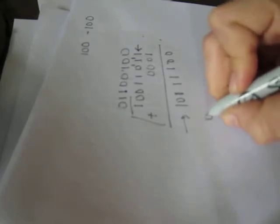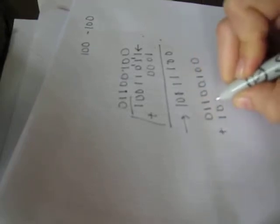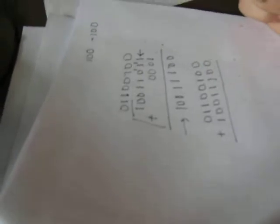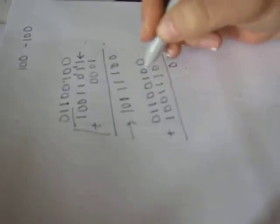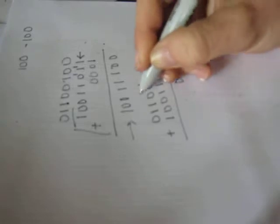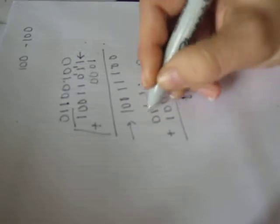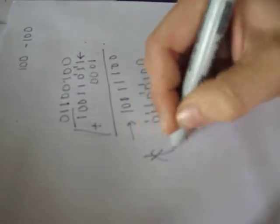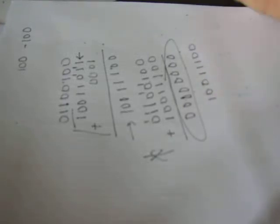So when we add a one, we get: one plus one, one plus one, one plus one, one, one, one — giving us 10011100. So now this is our two's complement. Let's test it out. Take our original 100: 01100100, and add our two's complement 10011100. We get all zeros plus a carry one that we don't care about. So two's complement for 100 is 10011100.